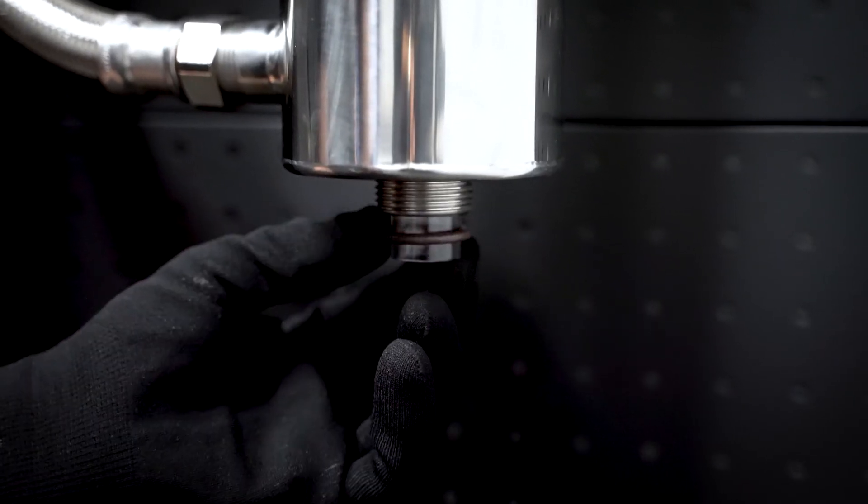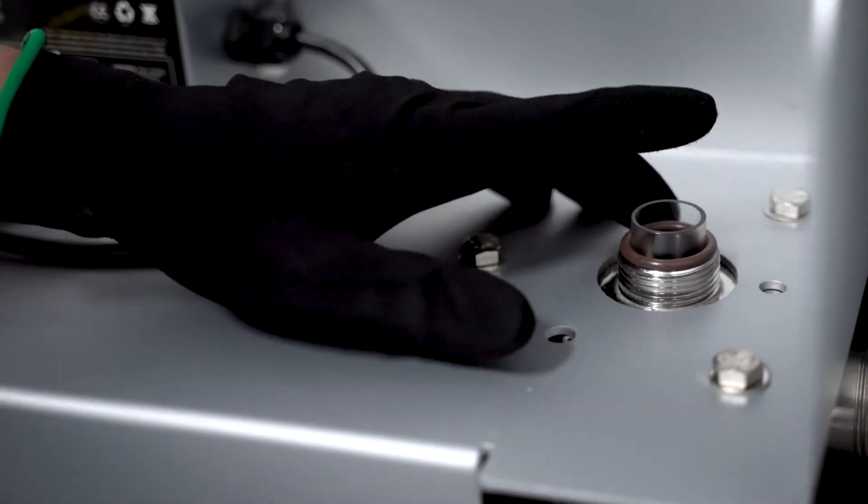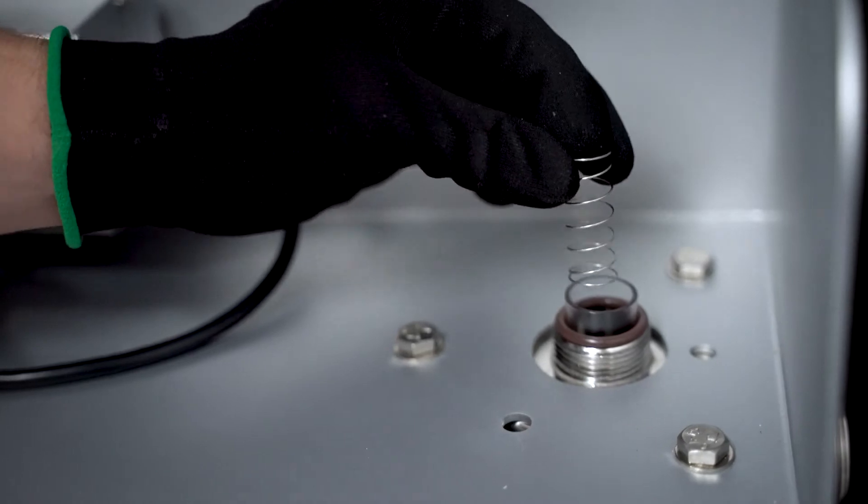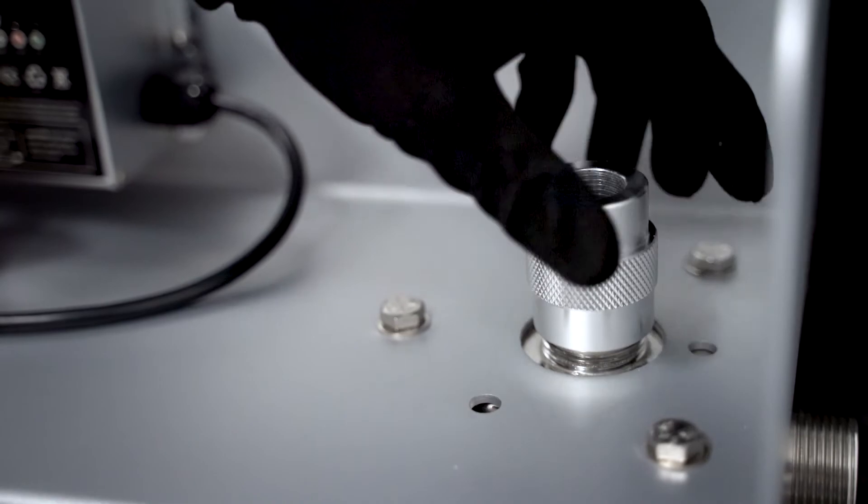Place the bottom o-ring on the quartz sleeve and screw the bottom aluminum nut onto the chamber. Gently tap the sleeve on the top to ensure that it is sitting firmly on the bottom aluminum nut. Drop the spring into the quartz sleeve and then screw the top aluminum nut back onto the chamber as shown.